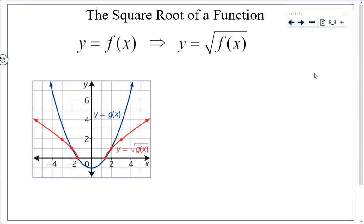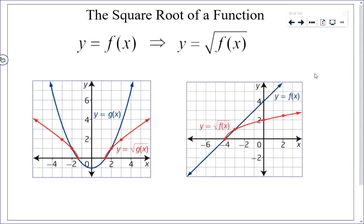Invariant points for square root functions occur where y equals 0 or y equals 1, since the square root of 0 is 0 and the square root of 1 is 1. The blue graph y equals g(x) transforms to the red graph y equals root(g(x)). To sketch the square root of a function, pick points and square root the y-coordinates, then replot. The square root of a linear function produces a half-parabola shape.